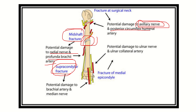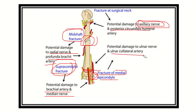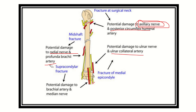In the supracondylar area — just above the condyle — a fracture will cause damage to the median nerve and the brachial artery. At the medial epicondyle, there is a risk of damage to the ulnar nerve and the ulnar collateral artery. So all of these nerves are very important to remember in relation to their specific regions.